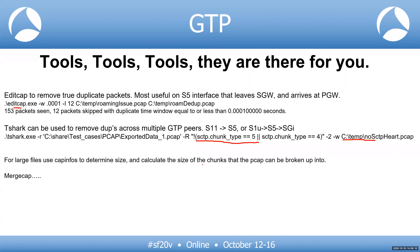Regarding the question on S1AP vs. NGAP — they don't differ significantly; the dissector makes them look pretty much the same. For capture locations, the quickest place is on the gateways themselves. Cisco is widely used, and their capture engine is straightforward. If that doesn't work, you need taps on the S-Gateway or P-Gateway — and they need to be hefty taps because you could have tens or hundreds of gigabits going through.